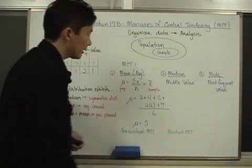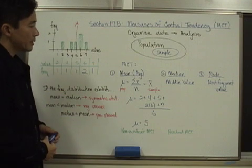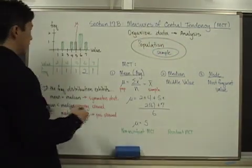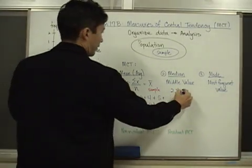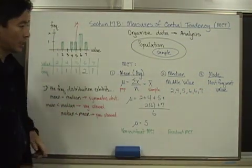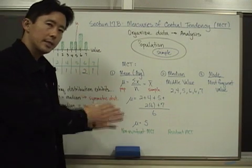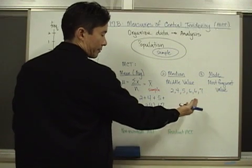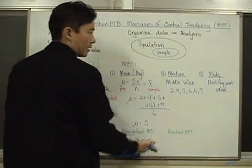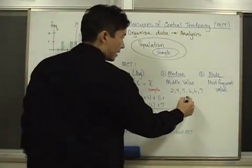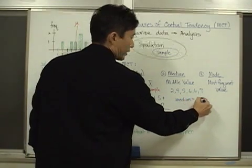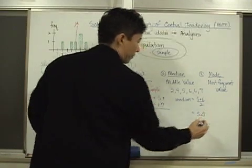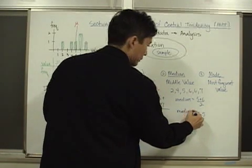Now let's look at the median — the middle value. We organize our information in numerical order: 2, 4, 5, 6, 6, 7. There are 6 values, so there is no single middle value. The median is therefore the average of the two middle values: (5 + 6) ÷ 2 = 11/2 = 5.5. So our median is 5.5.